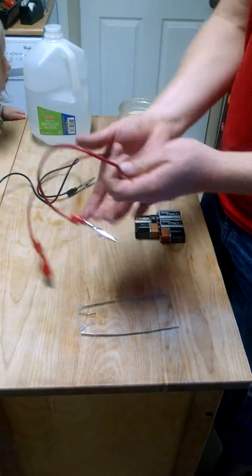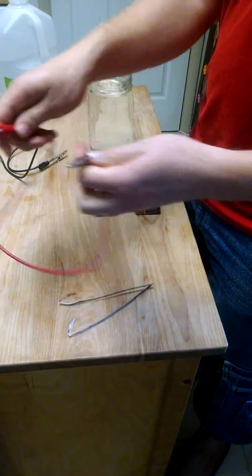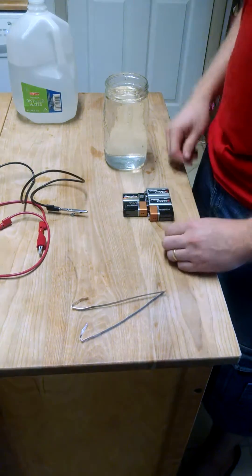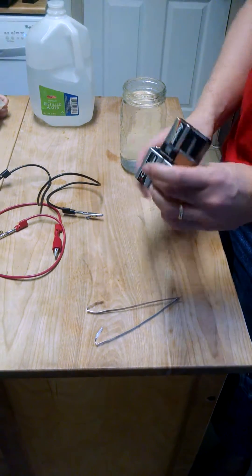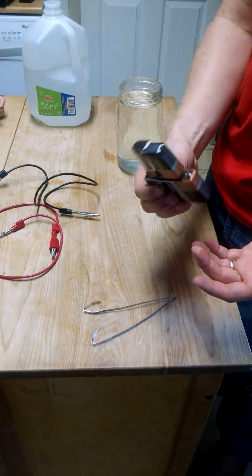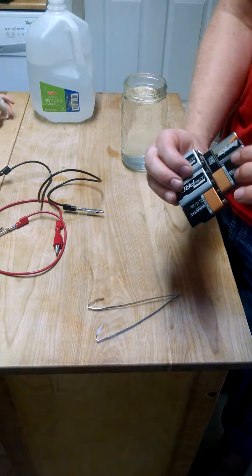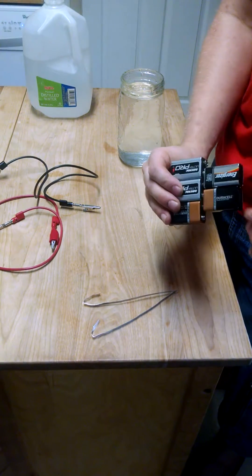You'll need some wires with gator clips. You need two of them, one for your positive and one for your negative, and batteries. You only really need three batteries. These are starting to get old, so I just added on some more, and then the more batteries you put on, the faster it goes.